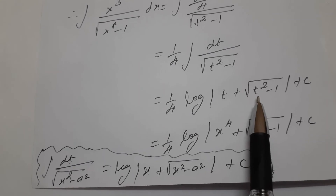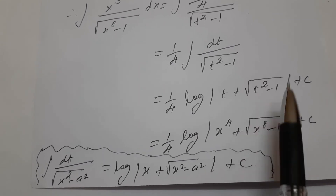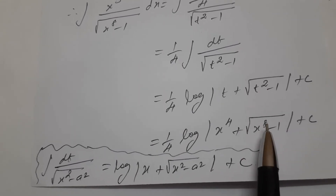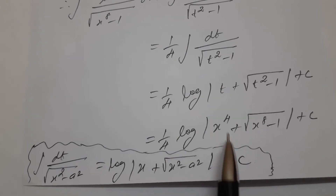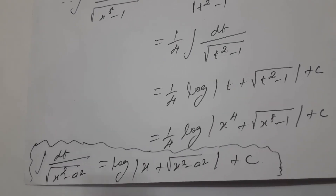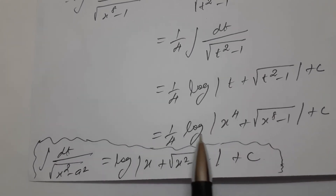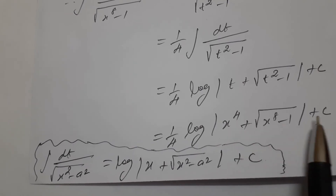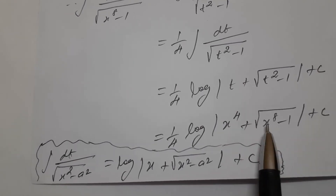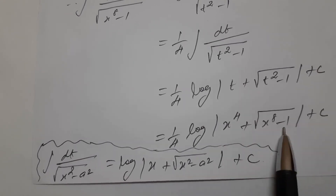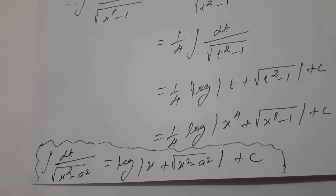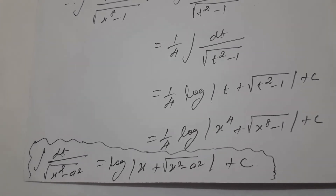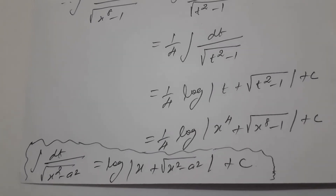Since t is equal to x power 4, substituting back: x power 8 comes from t squared. t is equal to x power 4. So the final answer is one by 4 log of x power 4 plus square root of x power 8 minus 1 plus c. This formula is easy to note. Clear, students?